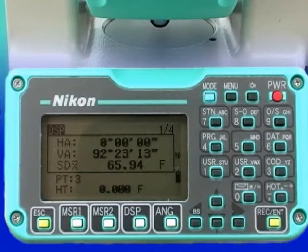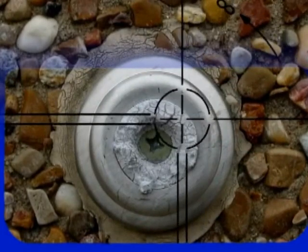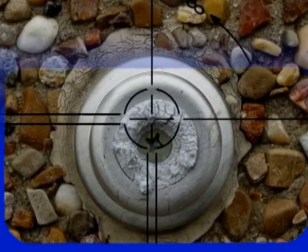After returning the instrument to the prior recorded horizontal and vertical angle settings, the object is sighted through the telescope and movement can be immediately ascertained by seeing if the crosshairs of the telescope are still centered on the point being monitored.